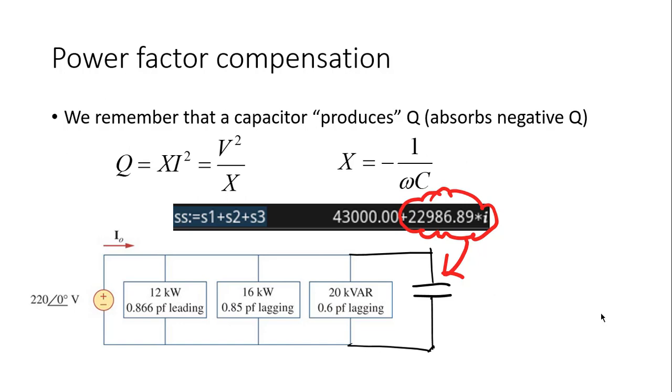Not always do we compensate completely all the reactive power. That is rather unusual. Normally we compensate only a fraction of the total reactive power with a capacitor so that the source on the left provides all the active power and a little bit of the reactive power. But today it is about compensating completely all the reactive power.